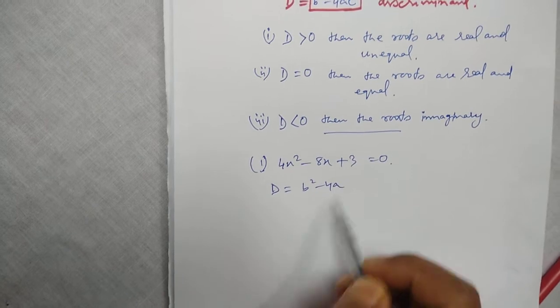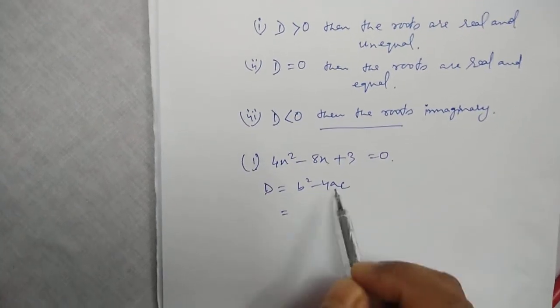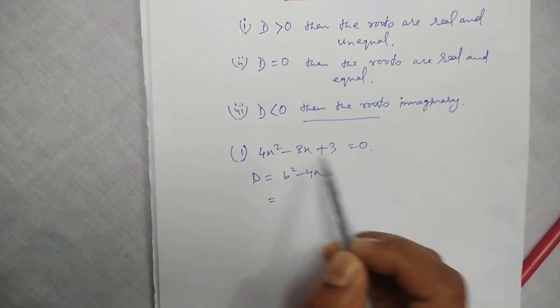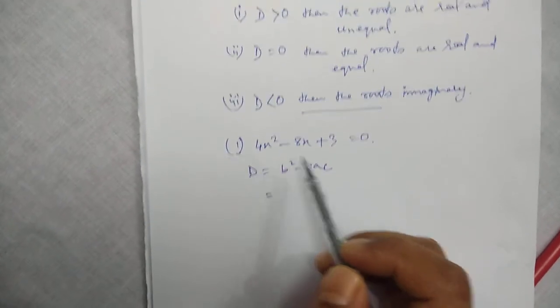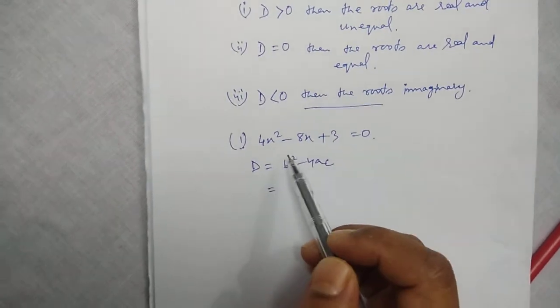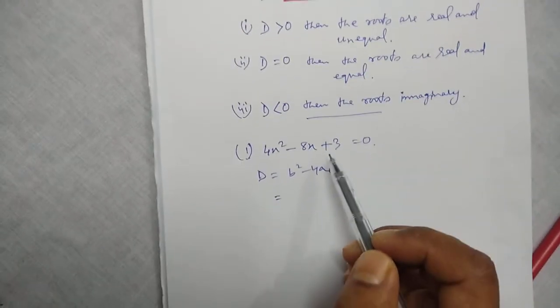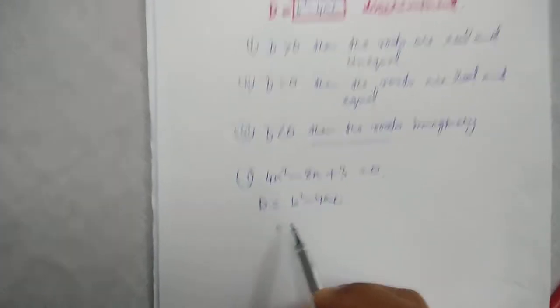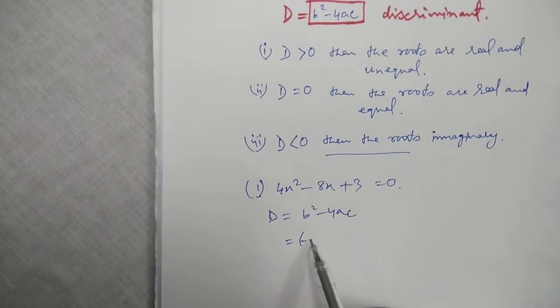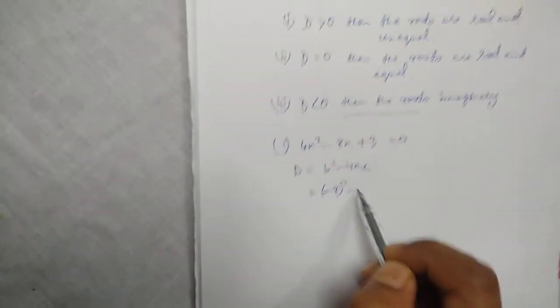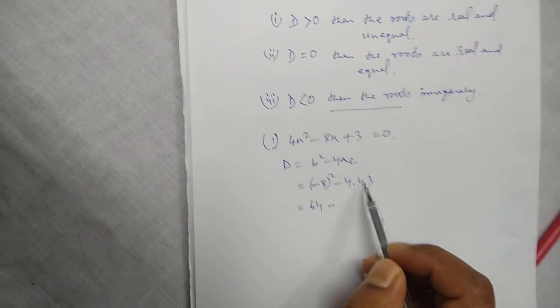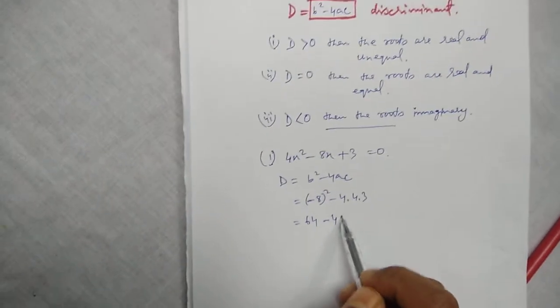D equals b square minus 4ac. As I taught you in my last class, identify the values of a, b, c by comparing with the standard form. So that is, b equals minus 8 square minus 4 into 4 into 3, so 64 minus 48.